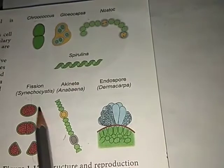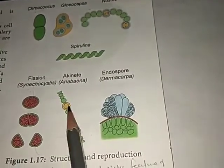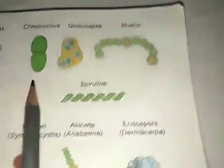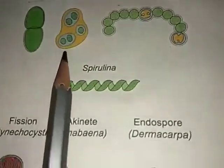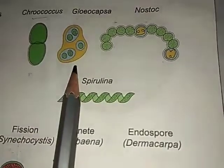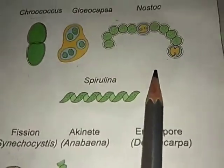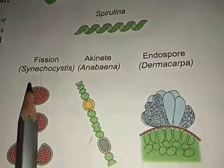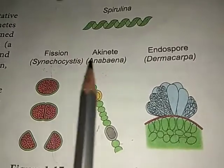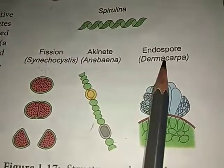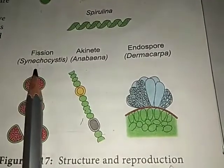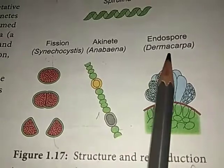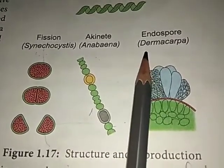Here are some structures and reproduction in Cyanophyceae. Chroococcus is unicellular; Gloeocapsa is colonial; Nostoc has thick-walled cells. Spirulina reproduces by vegetative thallus reproduction: fission (example: Synechocystis), akinetes (example: Anabaena), and endospores (example: Dermocarpa).